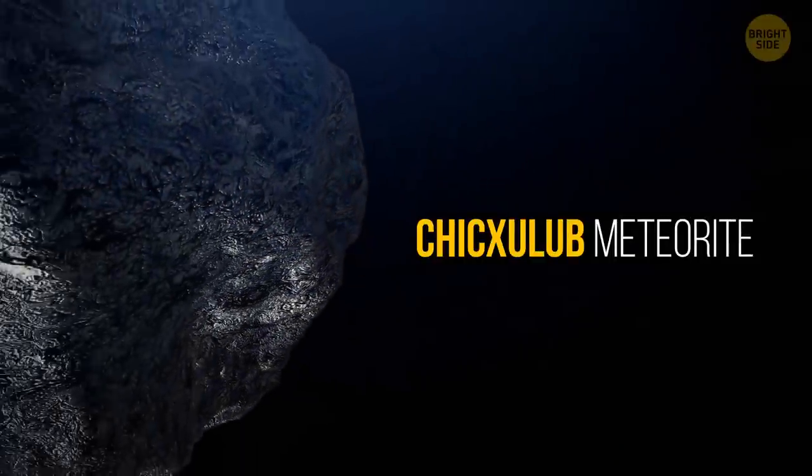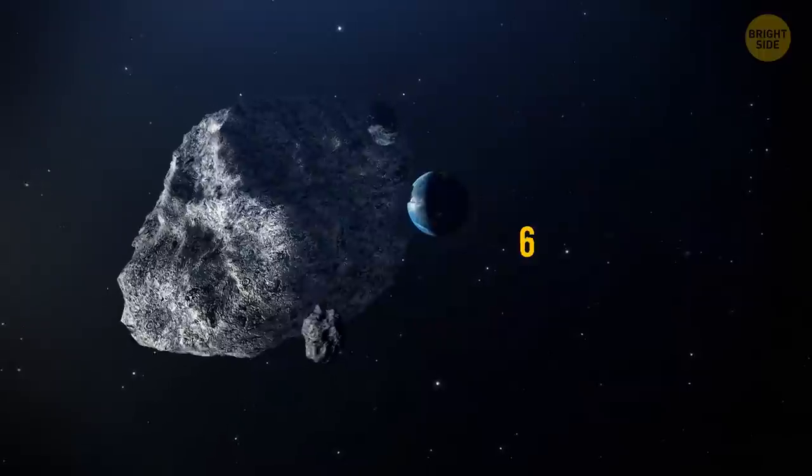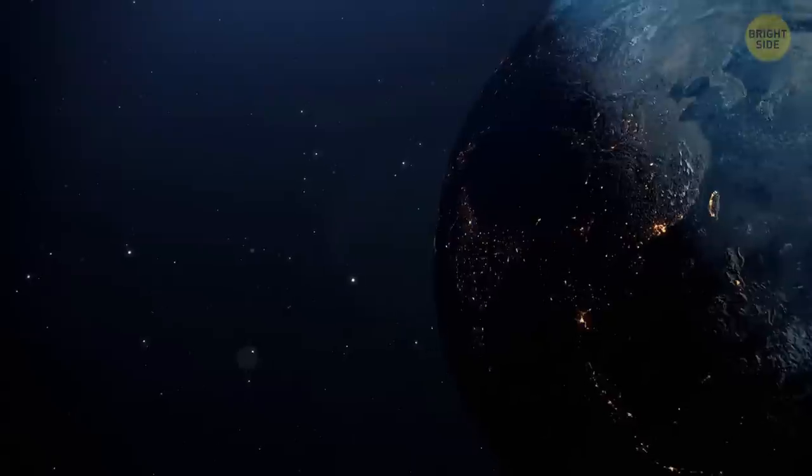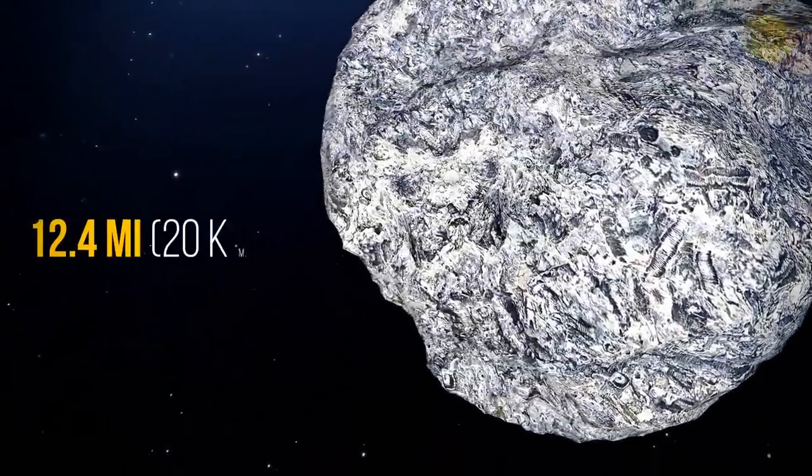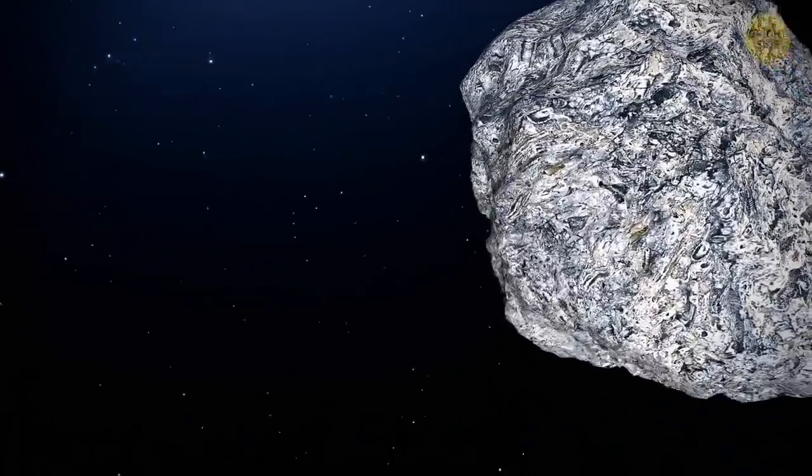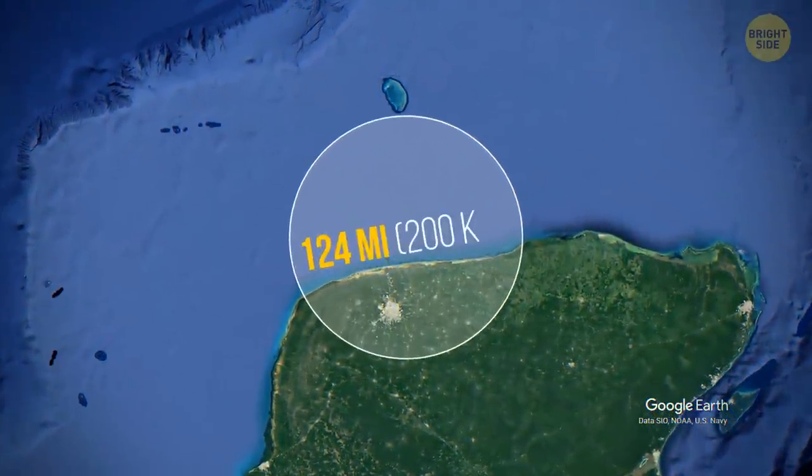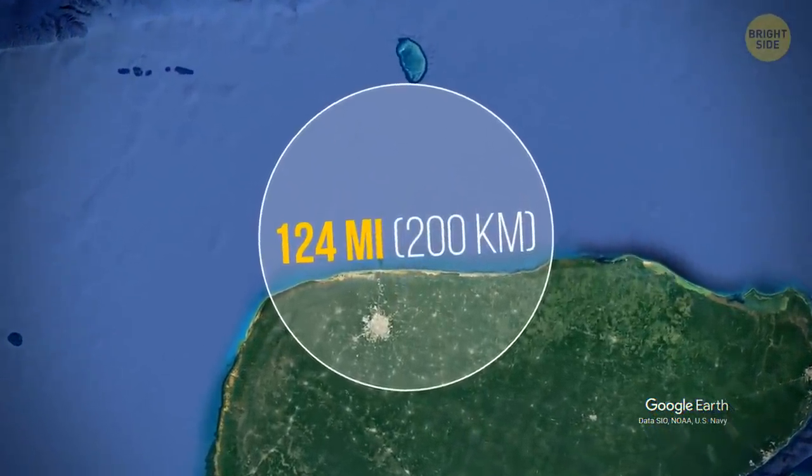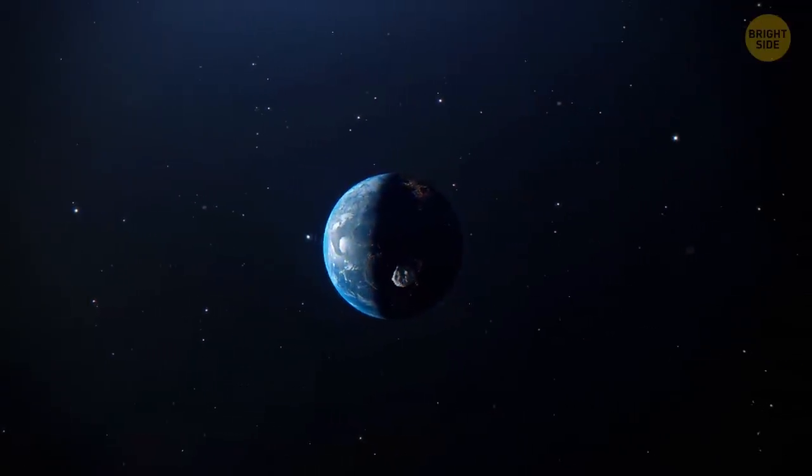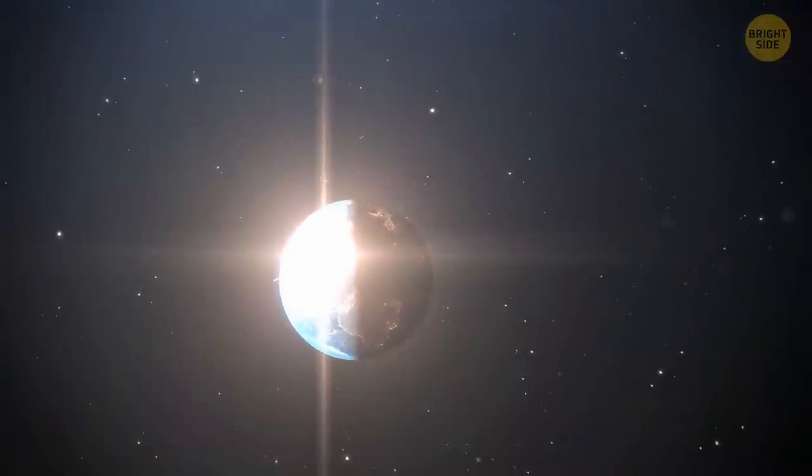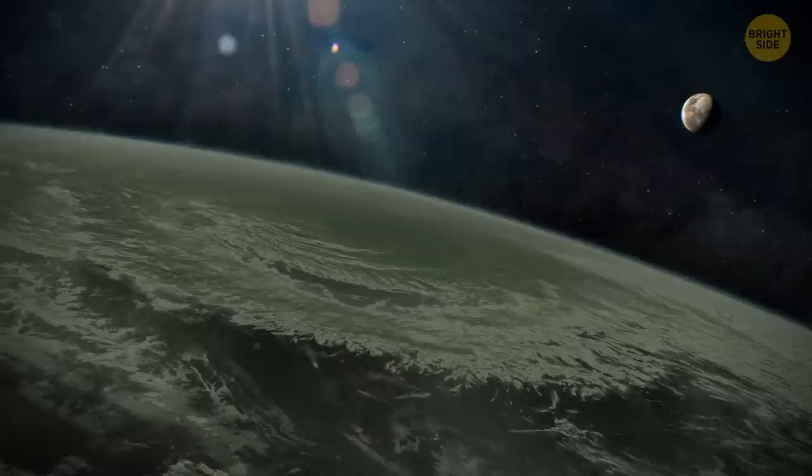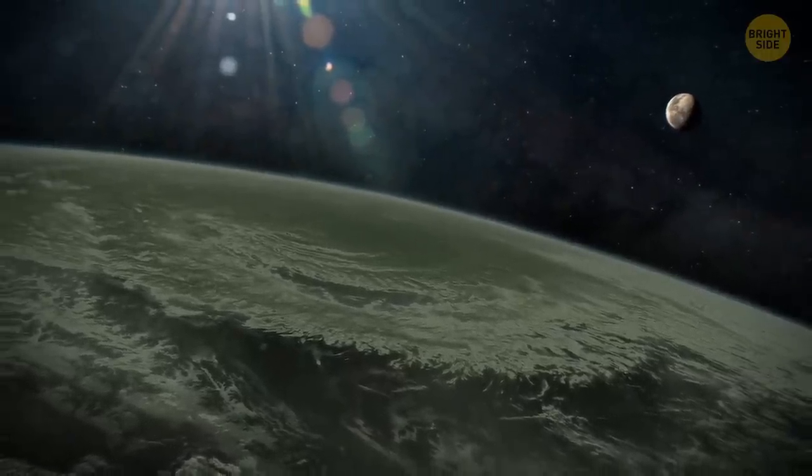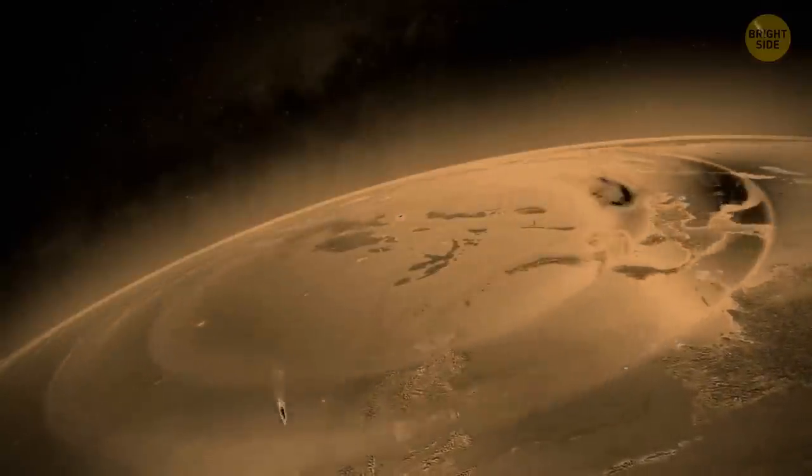Chicxulub meteorite. The thing that wiped the dinosaurs off the face of the earth. This happened about 66 million years ago. These collisions in general happen about every 500 million years. The height of the Chicxulub meteorite was 12.4 miles. It's so high that when it touched the ground, it could reach the stratosphere. Even looking at the 124-mile diameter crater left by this meteorite, you can understand how huge it was. When it collided with the earth, millions of tons of energy were released. This is an unimaginable disaster.